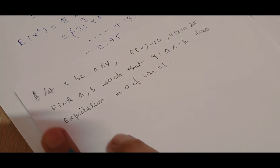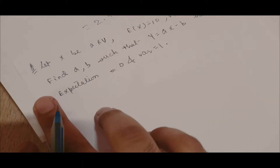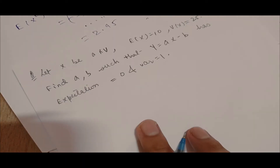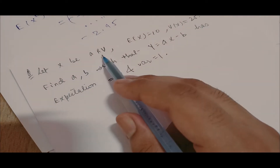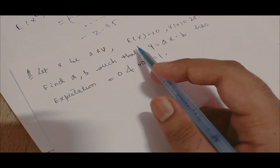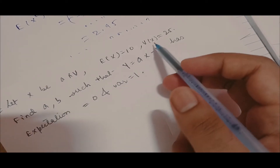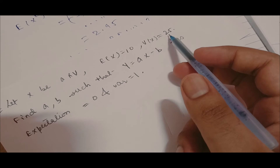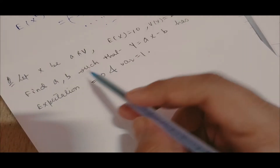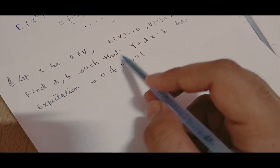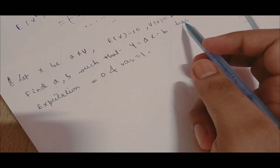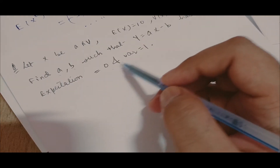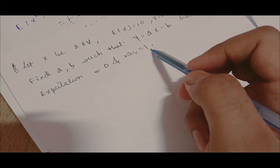Now let's move on to the second problem. Let X be a random variable where E(X) = 10 and Var(X) = 25. Find a and b such that Y = aX - b has E(Y) = 0 and Var(Y) = 1.